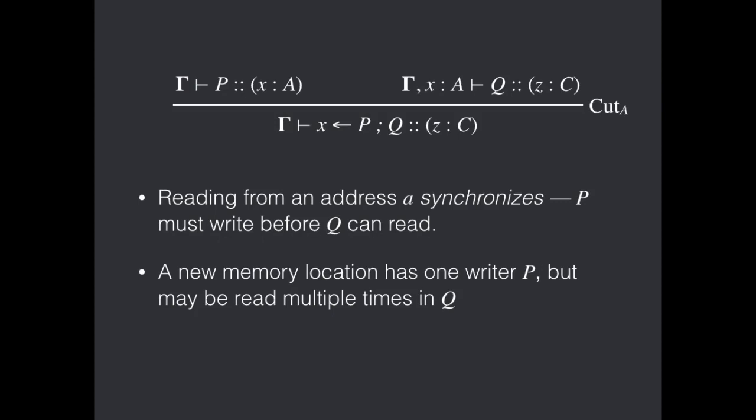And second, a new memory location has only one writer P, but may be read multiple times in Q. So in particular, we'll see that writing to a cell is a terminal action for a process. It can't write it again. It can't read from further things, but reading is non-terminal. So Q may read from the cell and then do some other stuff and then read from the cell again.